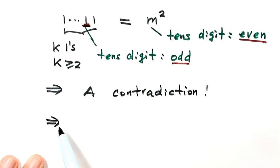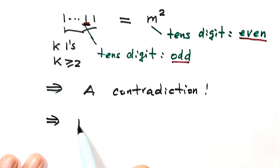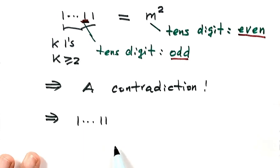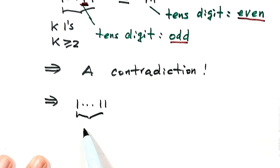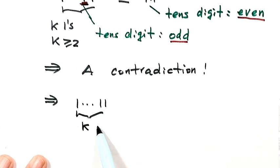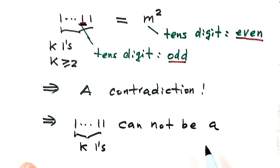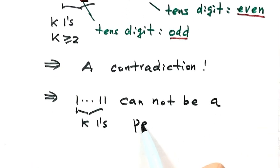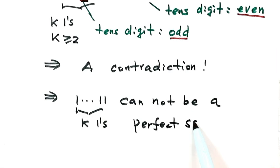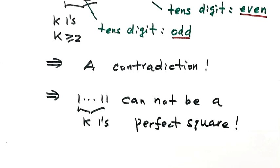So this means the number consisting of k ones cannot be a perfect square. We have just proved this statement. Thanks for watching.